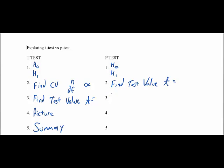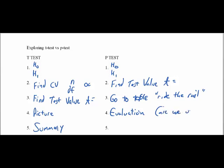We then compare that t-value to the alpha percentage by going to the table. I like to call this "ride the rail." Ride the rail has to do with how we look at our table once we get our t-value. Evaluation is a little easier with the t-test table than with the z-test table — we're just asking: are we under the alpha score? If we're under alpha, we reject the null hypothesis; if we're over, we do not.